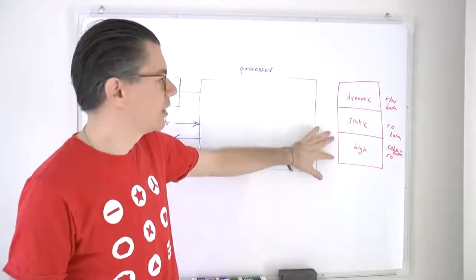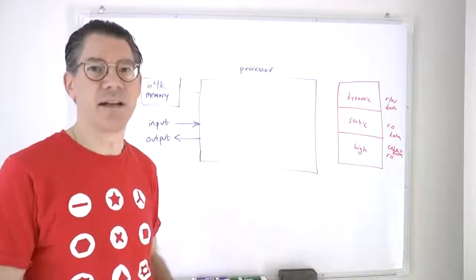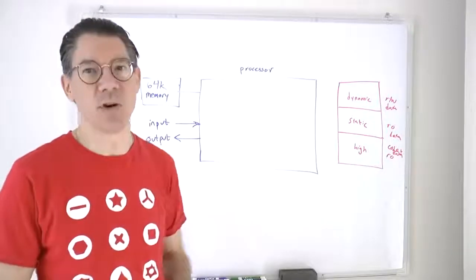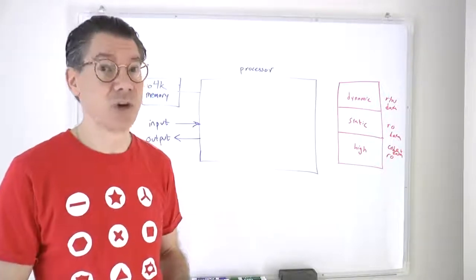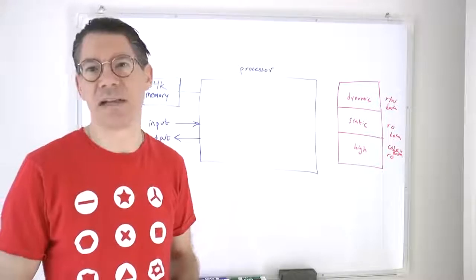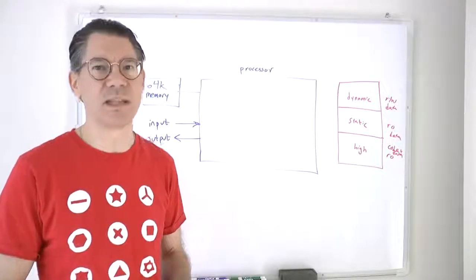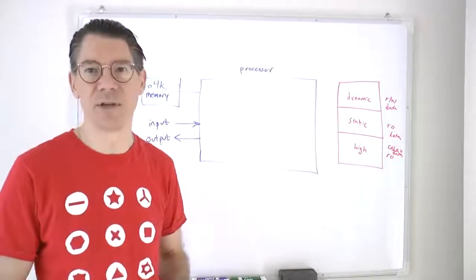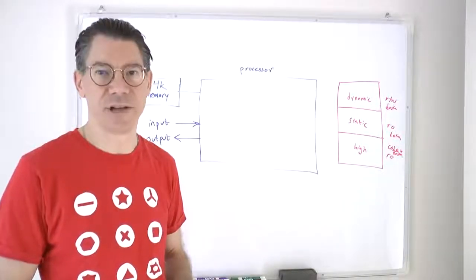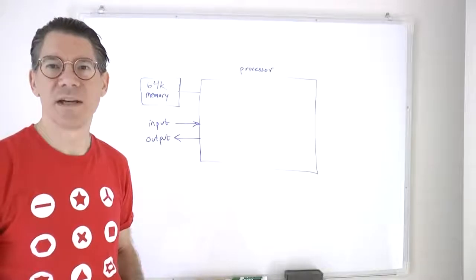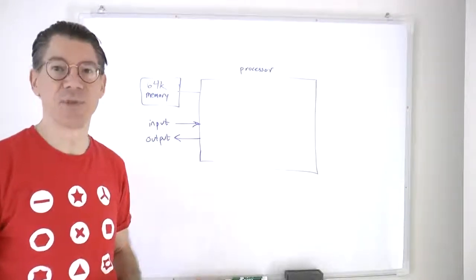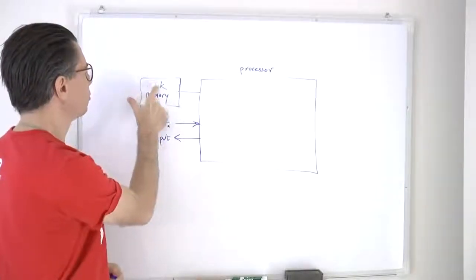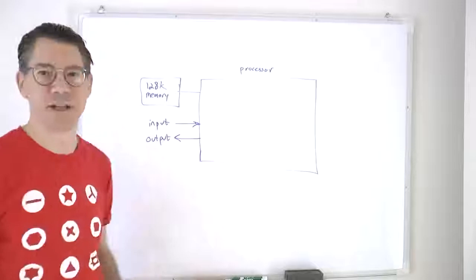In order to address anything in high memory, the Z-Machine used a trick: any time you want to access high data or a code routine, it divides the address by 2. This means you can represent the address of data or code in high memory with a 16-bit address, allowing you to address up to 128K. So we'll just change that number to 128K.